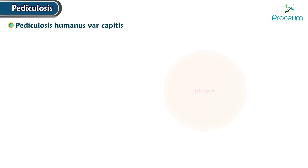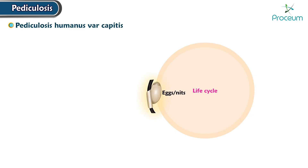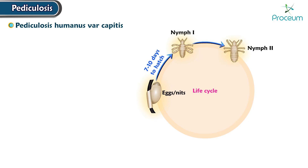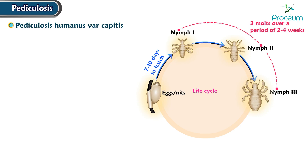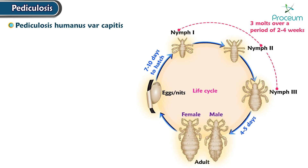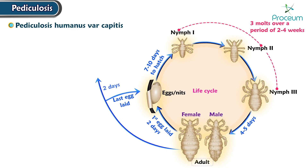Let's go over the life cycle of the head louse. In the life cycle of Pediculosis humanus var capitis, the eggs, also called nits, take approximately seven to ten days to hatch. After hatching, the louse progresses through the nymph stages, undergoing three molts over a period of two to four weeks. In the adult stage of the head louse, this condition is more commonly found in females than in males.